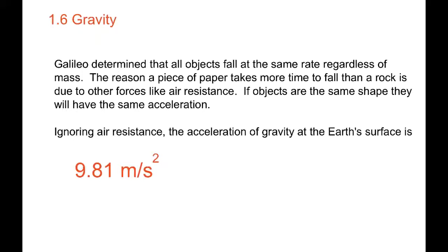In class, I showed you this using a piece of paper and a pen — I crumpled up the paper and they both fell at the same time. The key idea is that gravity always pulls things downward to the surface of the Earth, and the rate we've calculated to be most accurate is 9.81 meters per second squared. You're always going to use 9.81 for all your calculations.